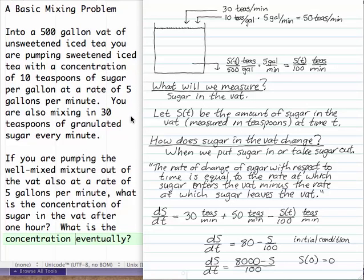You're also mixing 30 teaspoons of granulated sugar into the vat every minute. If you're pumping the well-mixed mixture out of the vat at the same rate of 5 gallons per minute, what's the concentration of sugar in the vat after one hour? And what's the concentration of sugar in the vat eventually?